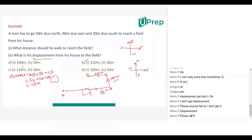Now our aim is to find out displacement. Displacement is the shortest path. From where to where? From the initial to the final point. The initial point is A and the final point is D. What will be the shortest path from A to D? You have to join them directly and find out this value AD.